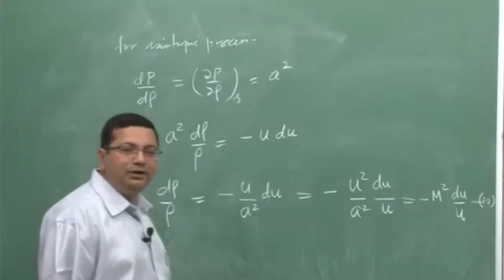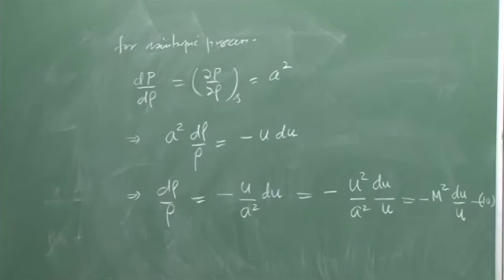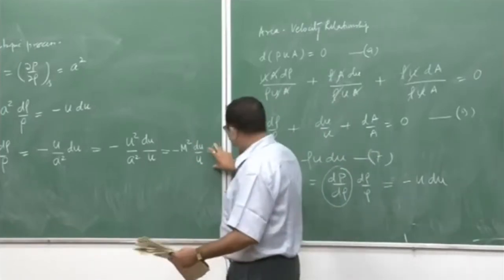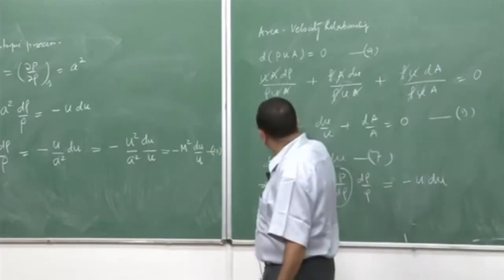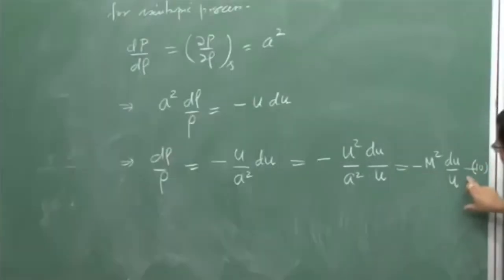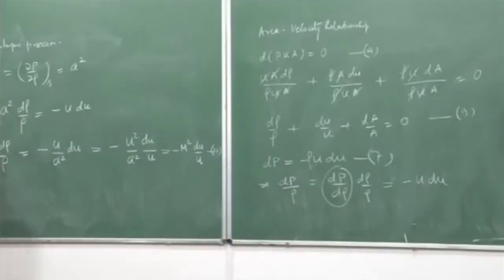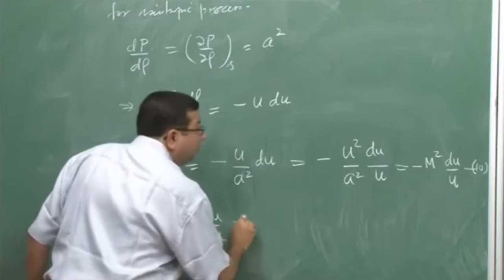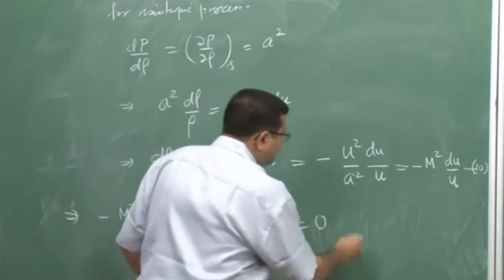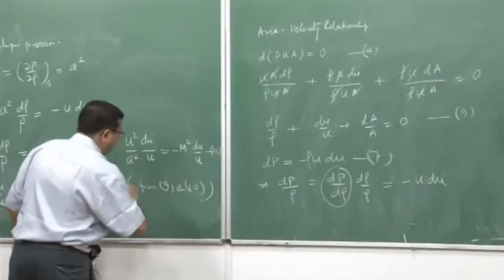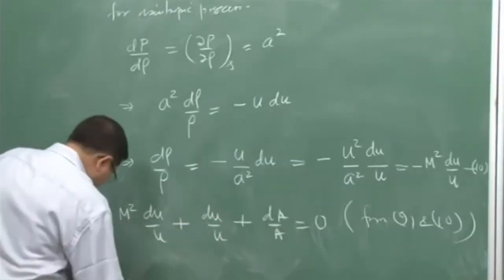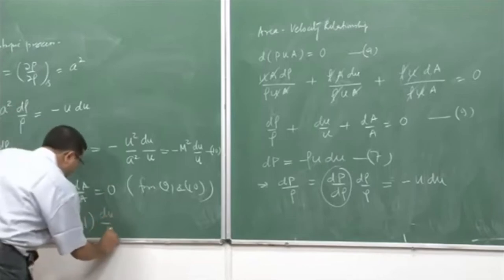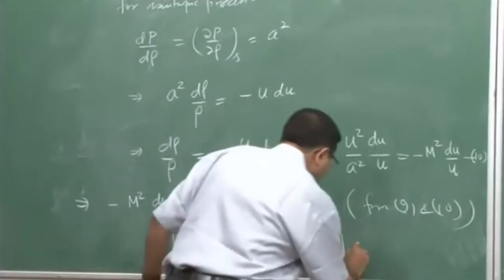We have now introduced the Mach number using the isentropic relationship and the speed of sound. Taking equation 10 and substituting dρ/ρ into equation 9, we get −M² du/u + du/u + dA/A = 0. Simplifying gives dA/A = (M² − 1) du/u. We call this equation 11 — the area-velocity relationship.